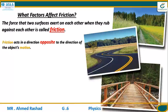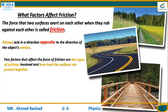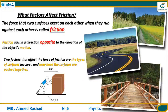Friction acts in a direction opposite to the direction of the motion. So in the normal state, the direction of friction force is opposite to the direction of the object's motion. Two factors affect the force of friction: number one, the type of surface, and number two, how hard the surfaces are pushed together.